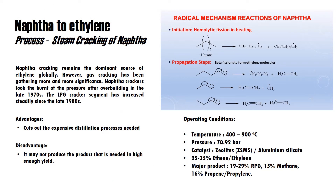Moving on to the next pathway to produce ethylene, which is the steam cracking of naphtha, where it remains the dominant source of ethylene globally. However, gas cracking has been gathering more significance as naphtha crackers took the burden of pressure after overbuilding in the late 1970s, and the LPG cracker segment has increased steadily since the late 1980s. The advantage of steam cracking of naphtha is to cut out expensive distillation processes, but it may not produce the desired product in high enough yield.